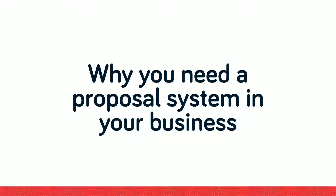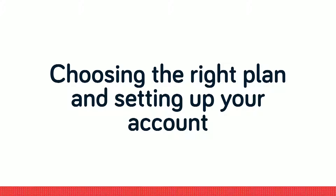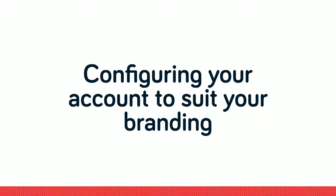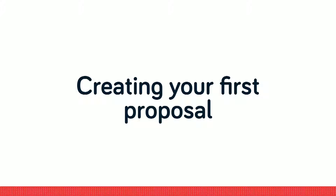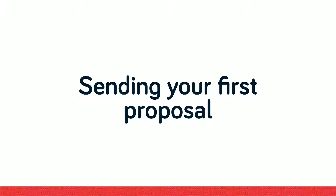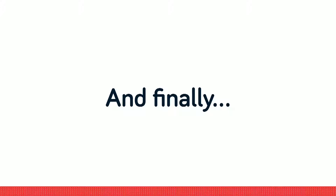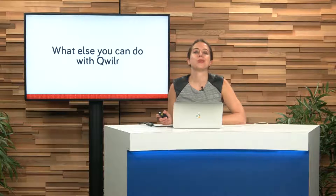Why you need a proposal system in your business in the first place. What types of businesses Quiller works well for. Choosing the right plan and setting up your account. Configuring your account to suit your branding. Creating your first proposal. Customizing the more advanced features. Sending your first proposal. Organizing and tracking your proposals after they're sent. And finally, what else you can do with Quiller.